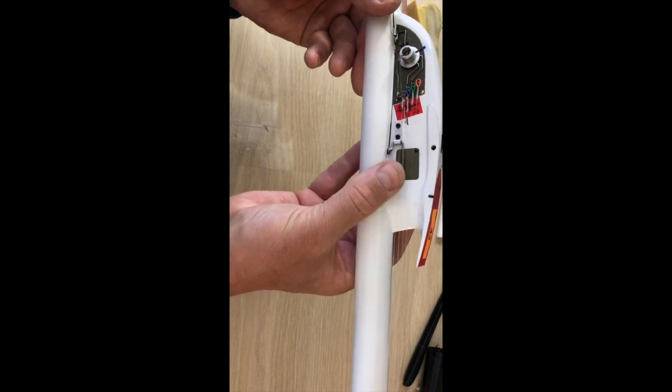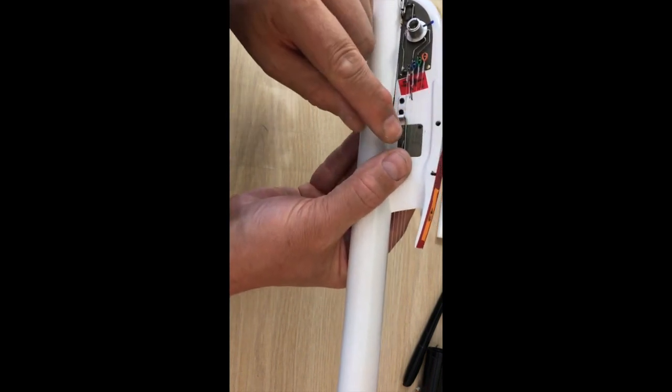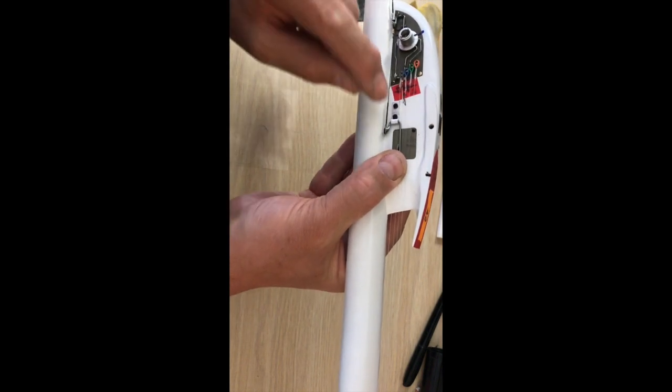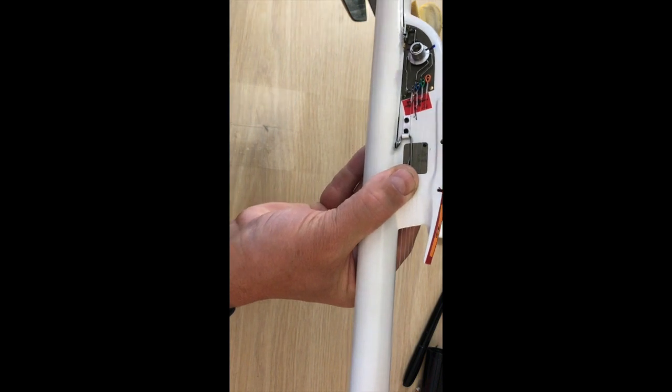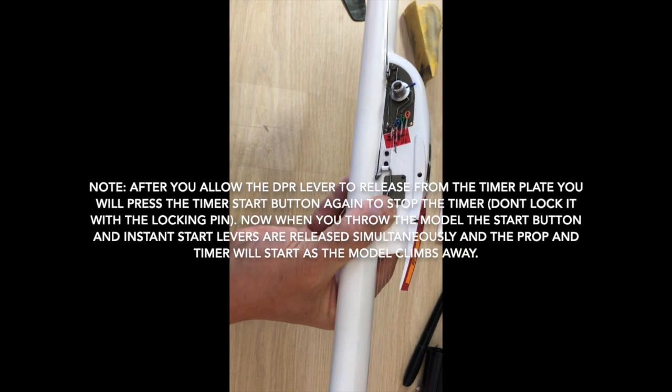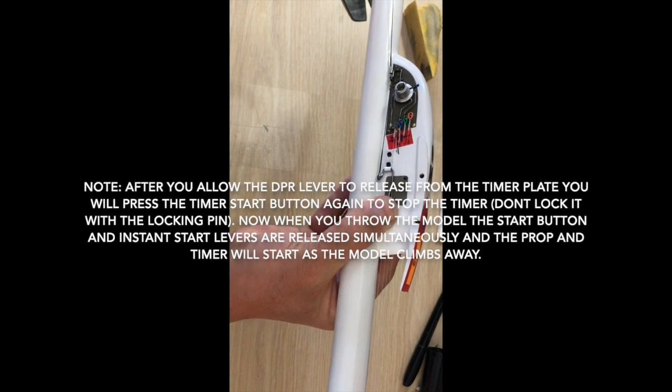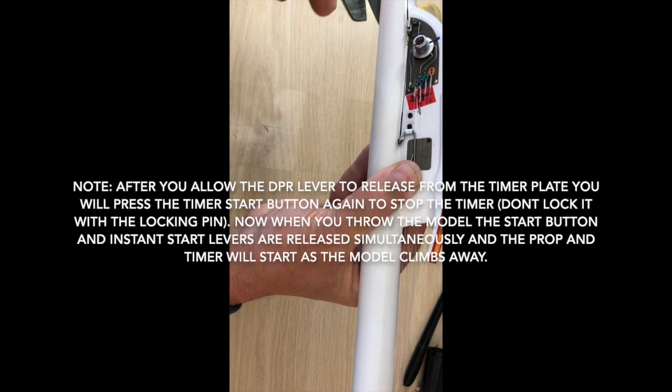The great thing about that is that when you're ready to launch the model, you can release the timer, let it run while you're holding this arm. So when you throw the model and release the arm, then the prop will start instantly. So you don't have to hold the prop with your other hand. It's a really handy device, especially for novices.